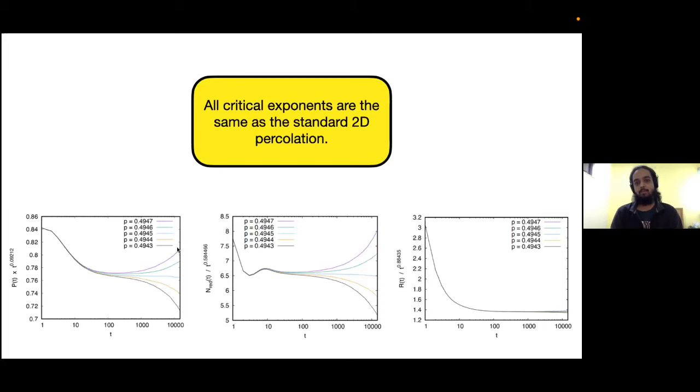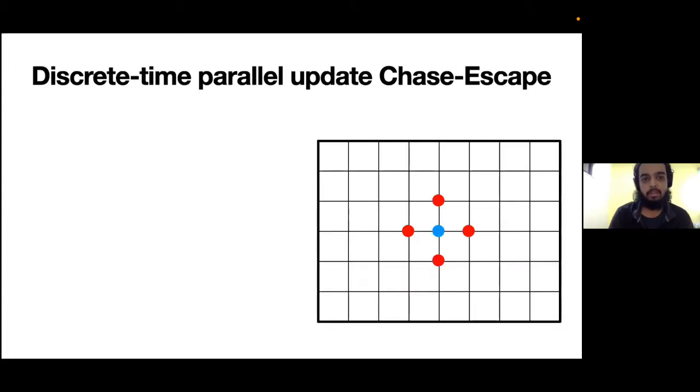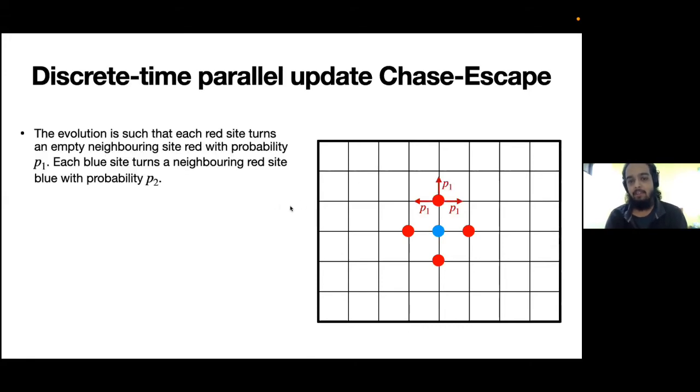To really understand the relation to this percolation problem, we came up with this discrete-time parallel update generalized Chase-Escape model. The model is again very similar to the previous one - you have a lattice where each site can be blue (predator), red, or empty. The evolution is such that each red site turns an empty neighboring site red with probability p1, and each blue site turns a red neighboring site blue with probability p2.